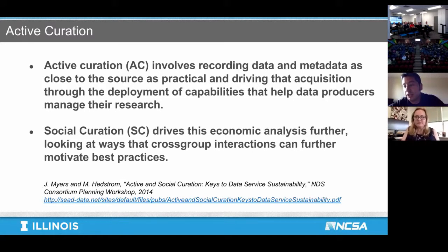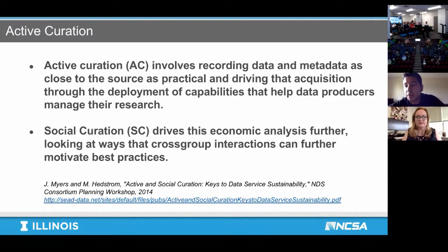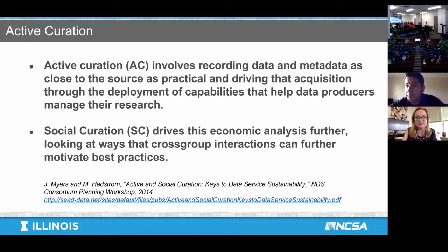Active curation helps by distributing that curation process throughout the life cycle of the data, going all the way back to when the data was created. One way is through social curation, common in many archives nowadays. As users use the data, they're able to tag it — users other than the authors can assign metadata tags, as well as derive products of the data. These get propagated up to the original data sets, curating the data socially rather than leaving it to just one person.